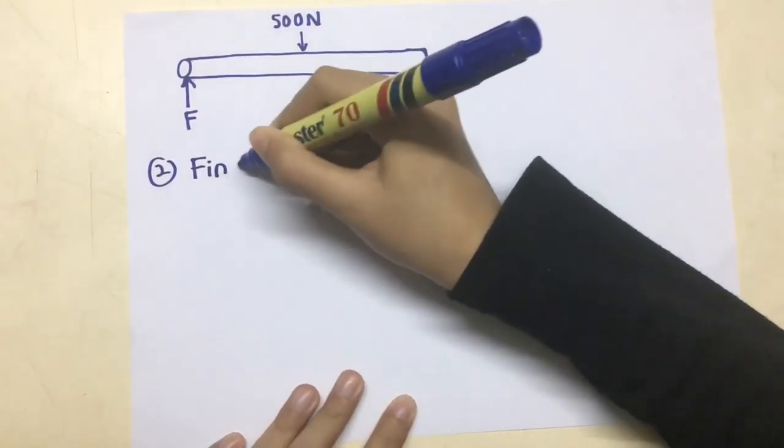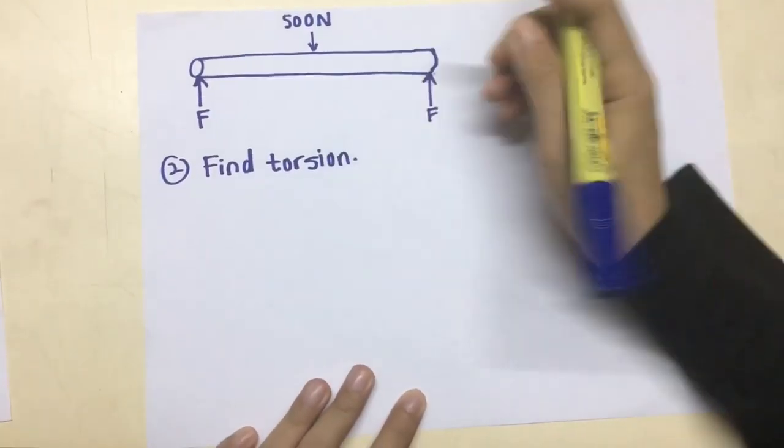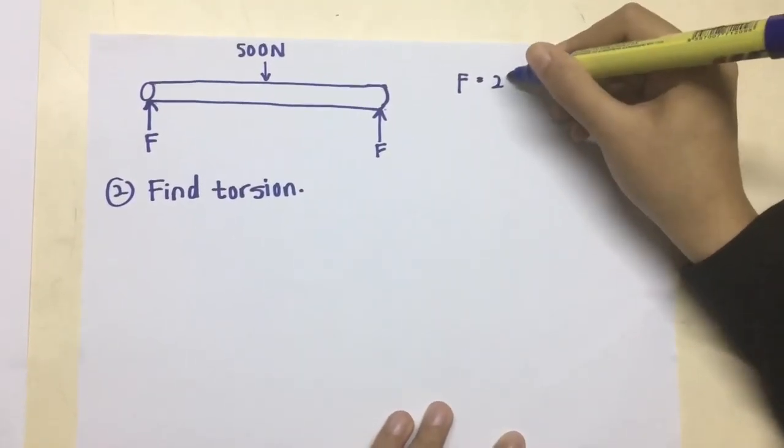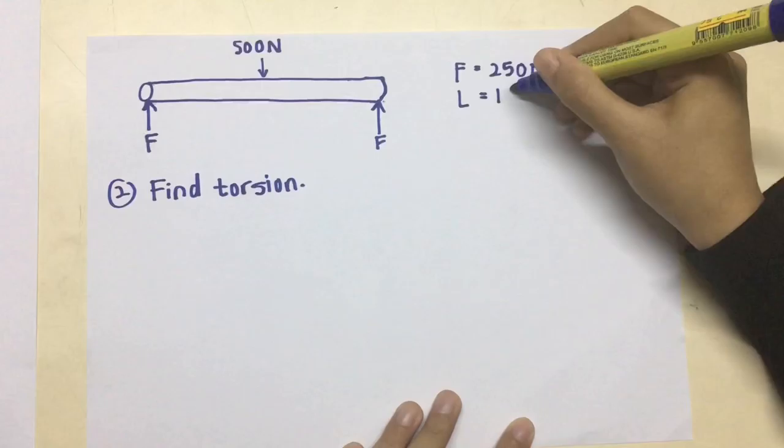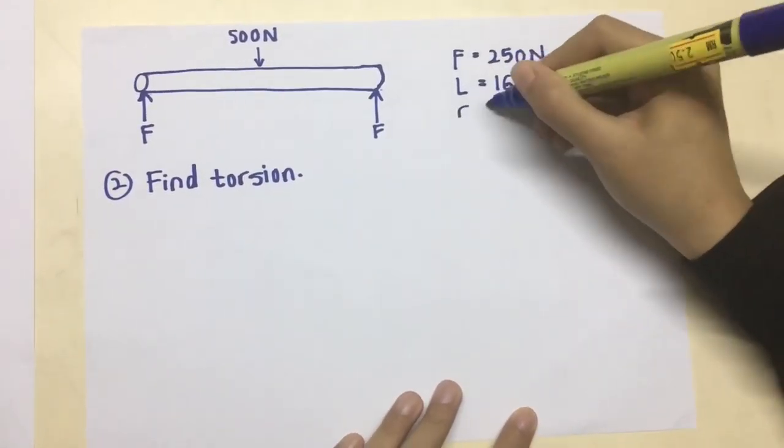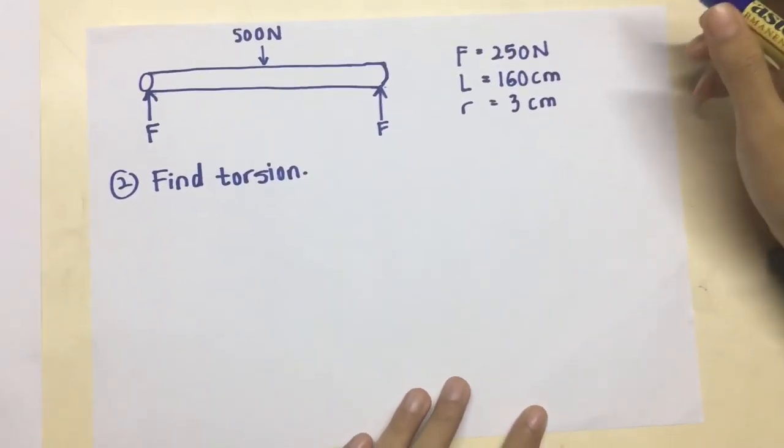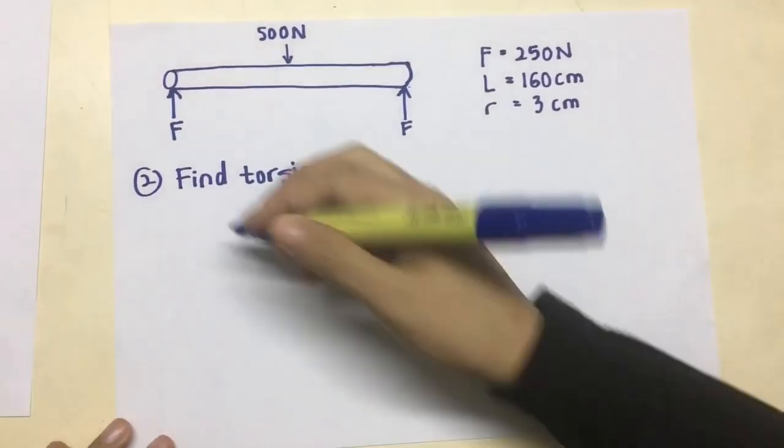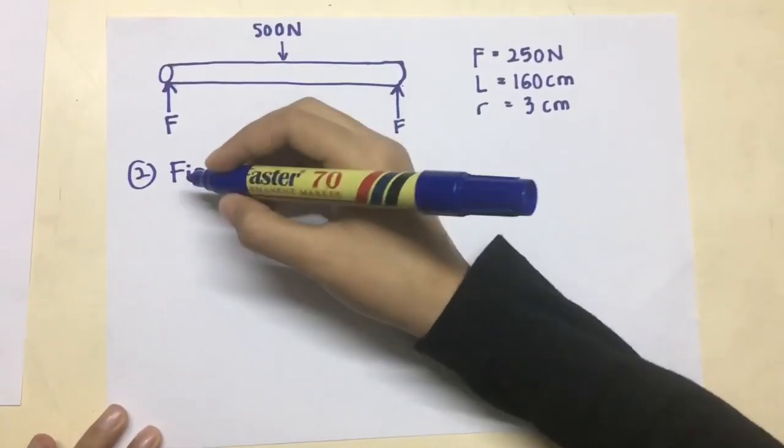The second thing we want to find is the torsion. As you can see at the flip body diagram above, there's F, which is force acting upward, and there's 500 N, which is the load that is acting downward. And there are the information of the load.